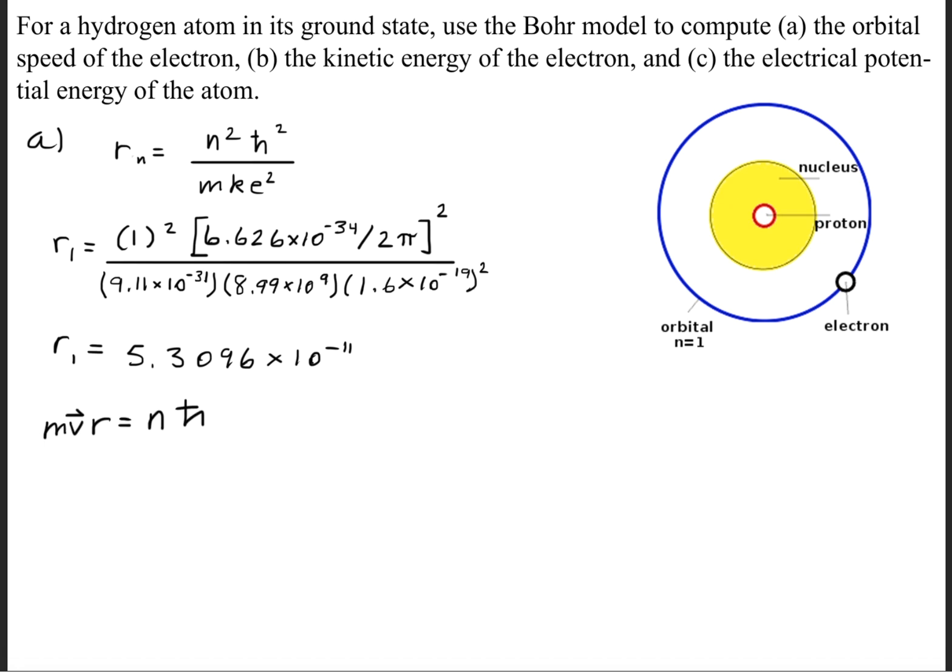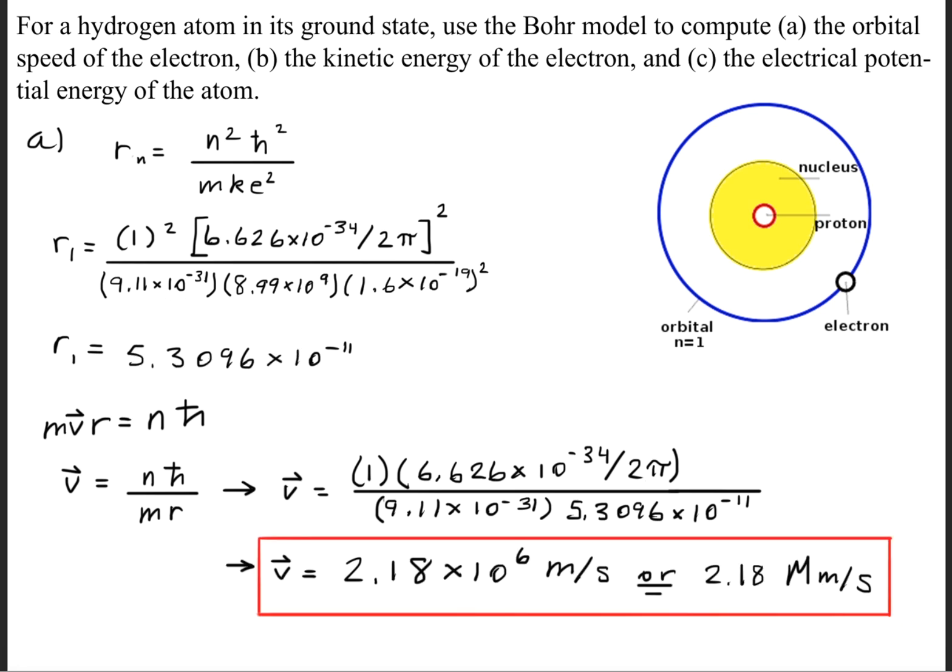Next, what we're going to do is we're going to quantize angular momentum. And when we do that, we'll get this relationship right here, that m times the velocity times the radius is equal to n times h bar. We'll go ahead and rearrange and solve for the velocity. And when we plug in the values for these variables here, we now know what the radius, because we calculate it right here above. We'll get a velocity of 2.18 times 10 to the 6th meters per second. Or we can write that as 2.18 megameters per second.